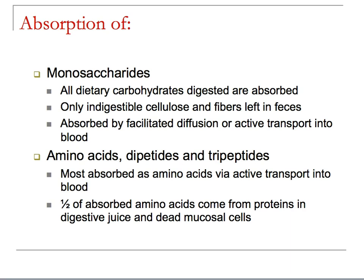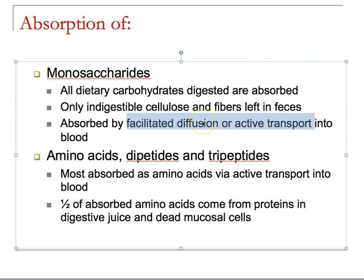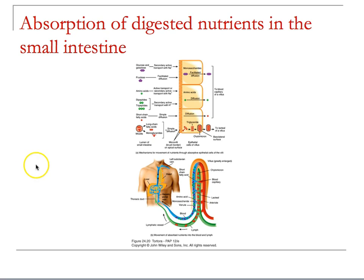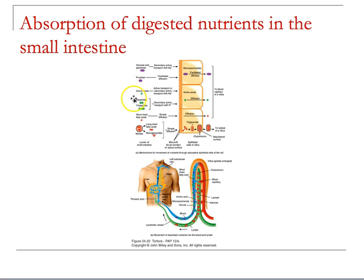You have to absorb all of this, otherwise what was the point of all the work? Absorption occurs by facilitated diffusion and/or active transport into the blood. Looking at the color-coded figure from the textbook: glucose and galactose (monosaccharides) use secondary active transport with sodium; fructose uses facilitated diffusion. Amino acids use secondary active transport with sodium, whereas dipeptides and tripeptides use secondary active transport with hydrogen protons.